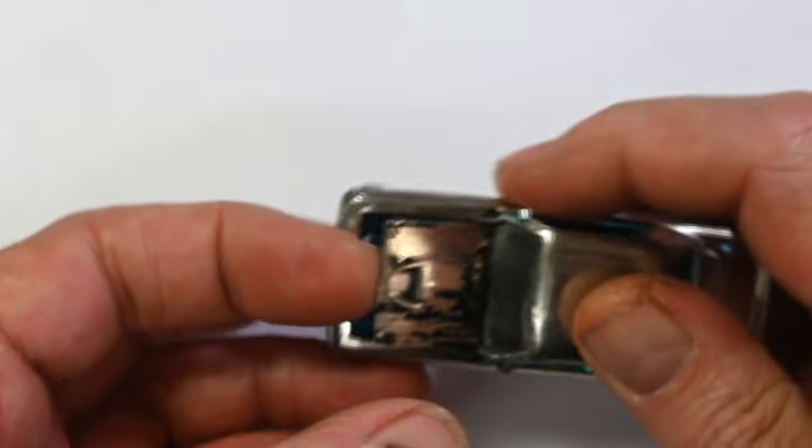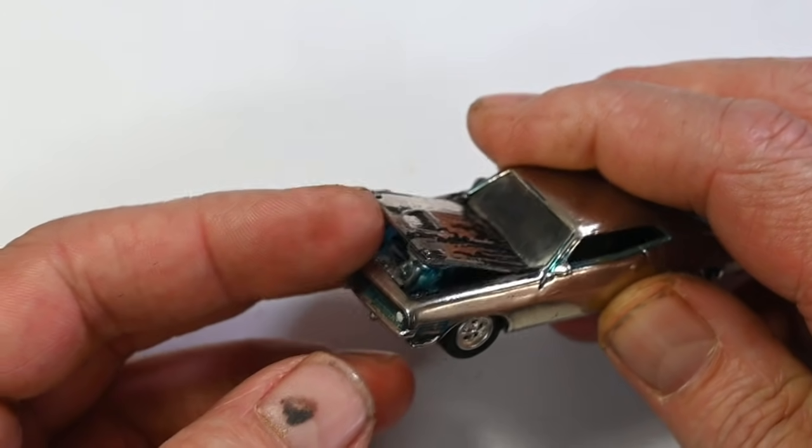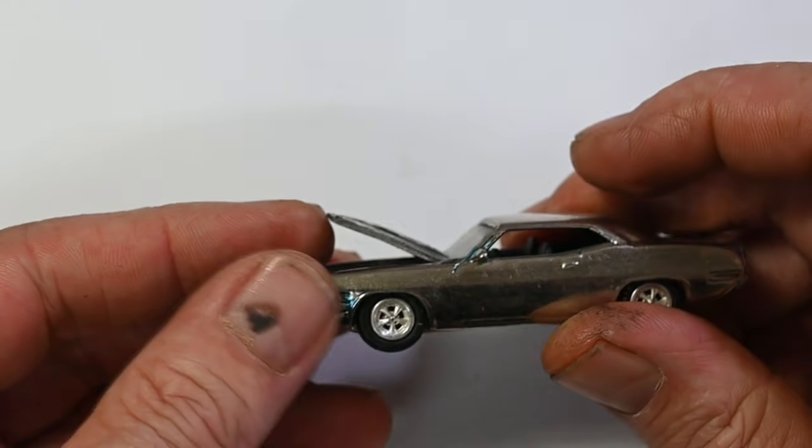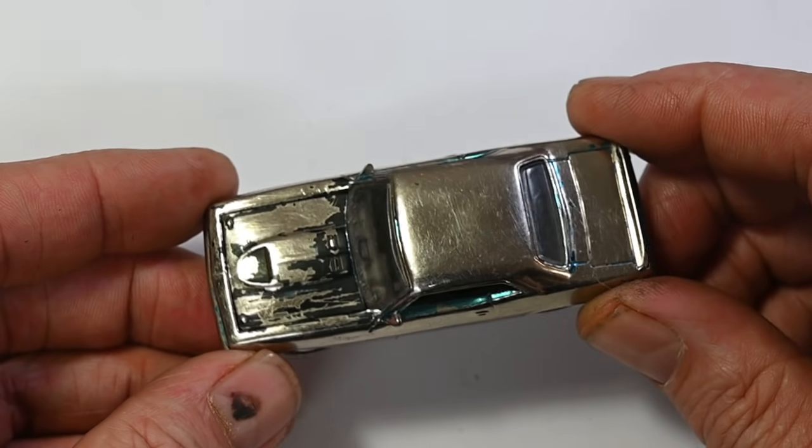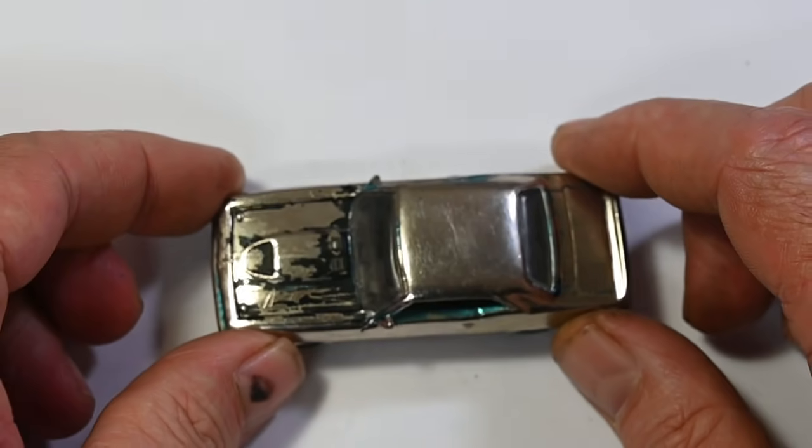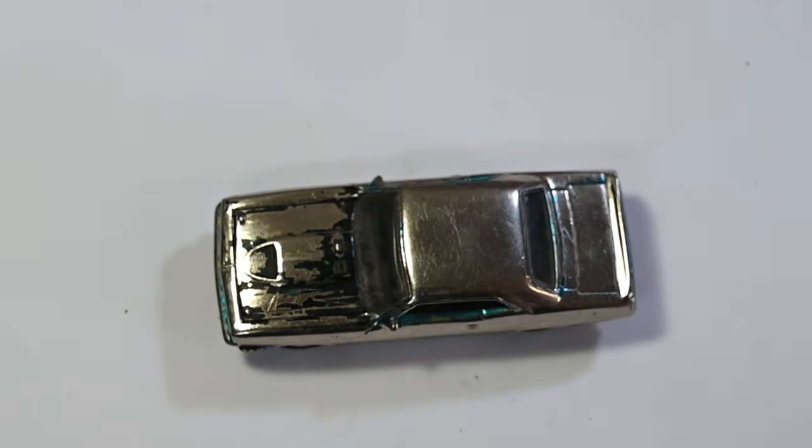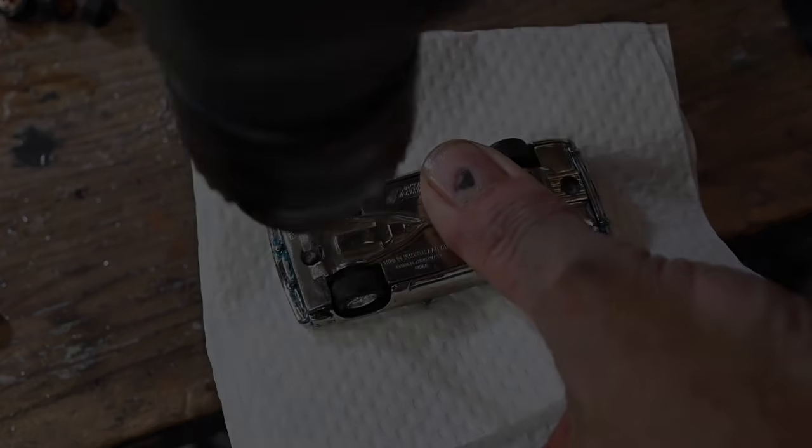It's nice, the bonnet opens and there's a motor in there but it presses up against the windscreen, so it just pops back down straight away. Anyway I don't know what's happened to all the candy paint on it, it's completely gone.